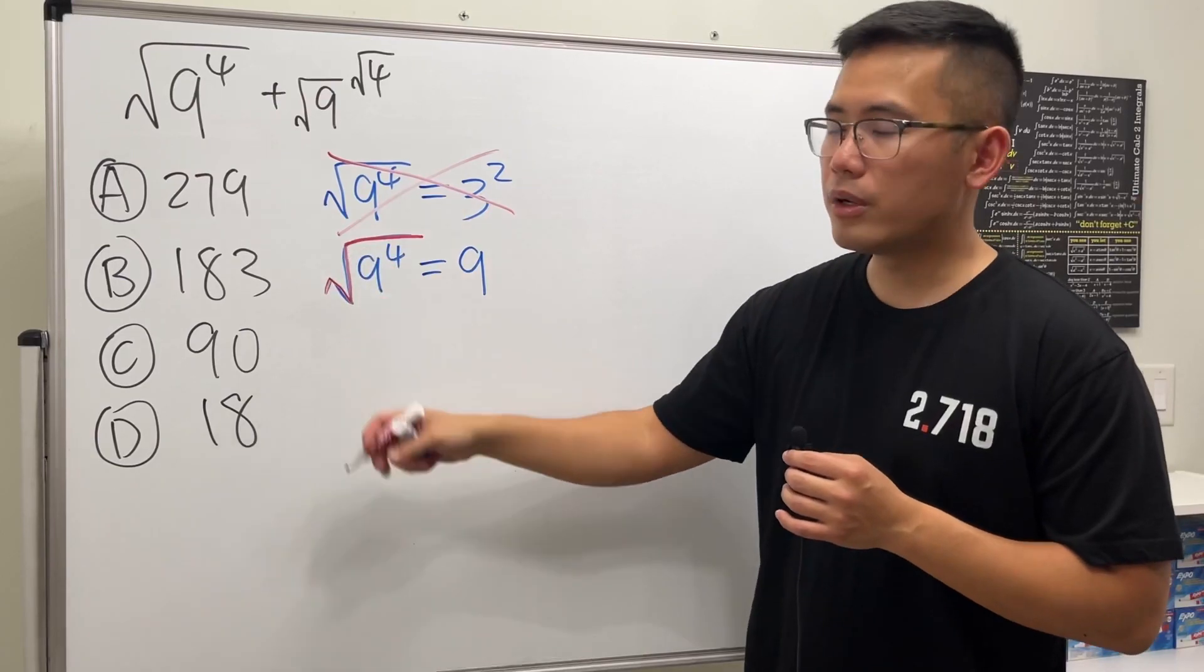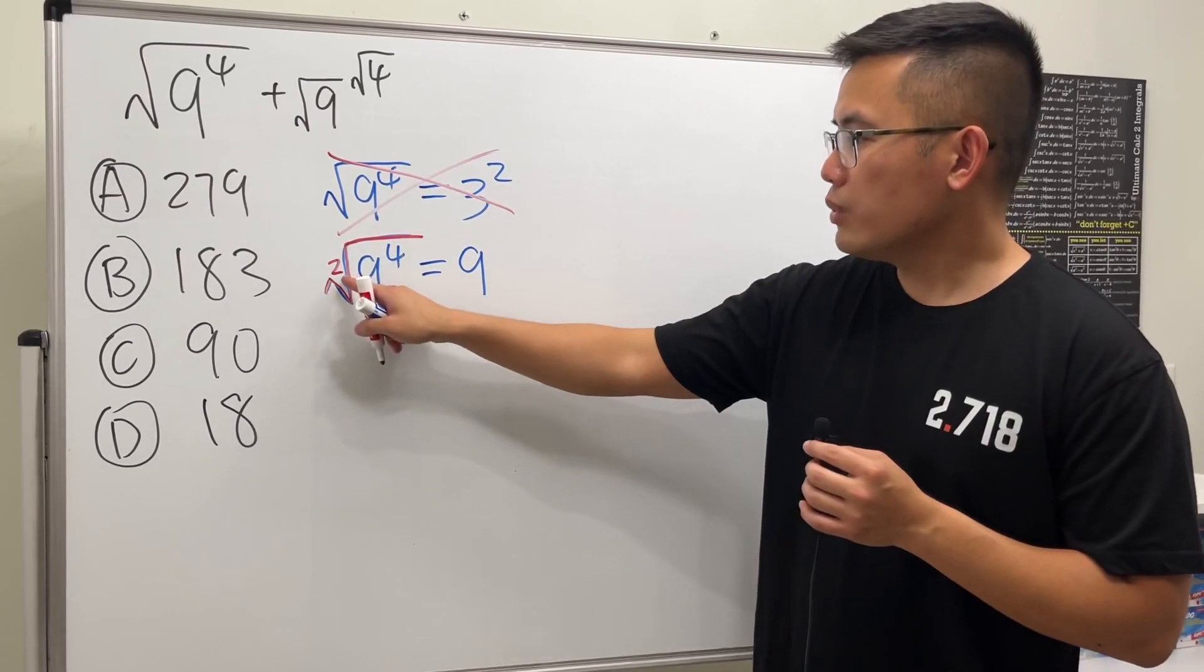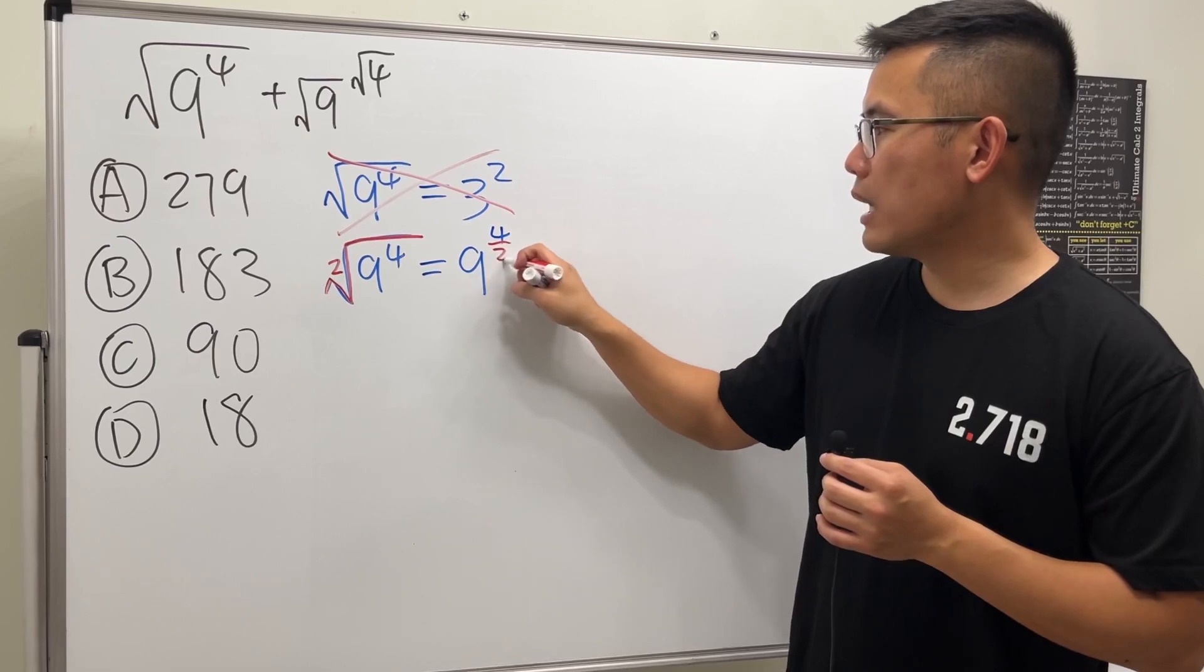even though you don't see any number, it's meant to be a 2, a square root. So what you do is 4 divided by 2, and that will be the new power.